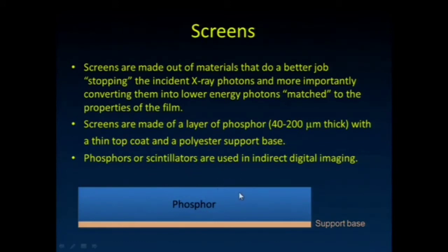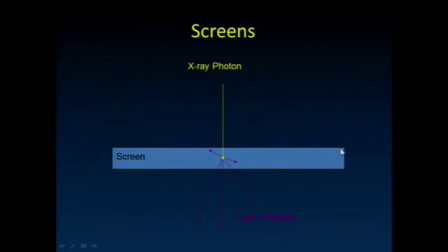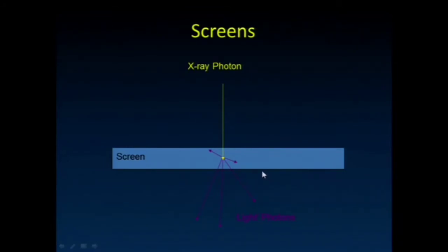Screens do a better job stopping those X-ray photons, usually made out of a material that has a higher Z than the material that makes up our detector — either the film or our detector elements on a digital detector. Phosphors and scintillators are analogous to screens used in indirect digital imaging. The X-ray photon strikes this screen material and converts this X-ray energy into multiple lower energy light photons. These are much more easily stopped and detected by a CCD camera or by film. The downside is they disperse out a little bit and therefore cause some blurring in the image.